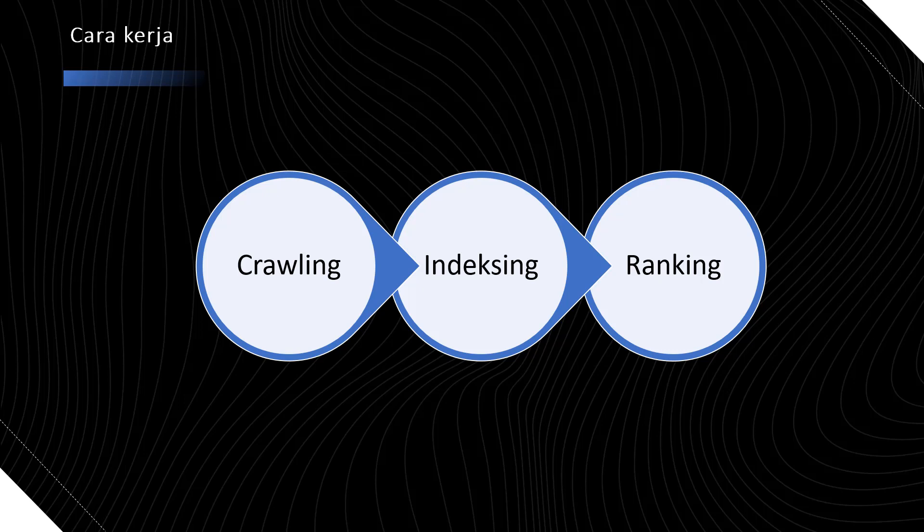Secara umum, teknik mencari informasi yang relevan di Google ada dua teknik dasar yang biasa digunakan. Yang pertama yaitu dengan menggunakan simbol-simbol matematika, dan yang kedua dengan menggunakan simbol-simbol Boolean. Kita akan coba contohkan filterisasi dengan simbol matematika.